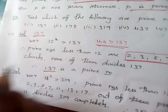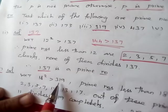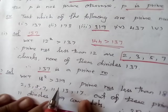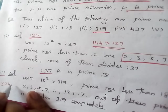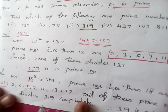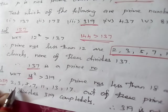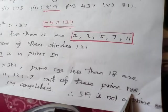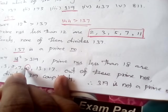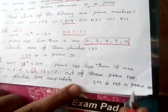Next, consider problem number 3: 319. We know that 18 squared equals 324, and 324 is greater than 319. So we find the prime numbers less than 18: 2, 3, 5, 7, 11, 13, and 17. Out of these prime numbers, 11 divides 319 completely. Therefore, 319 is not a prime number.